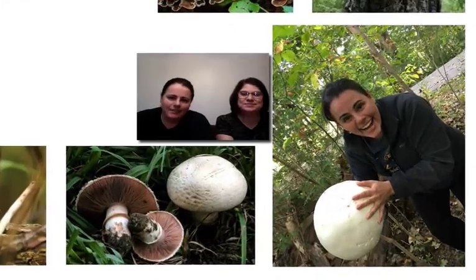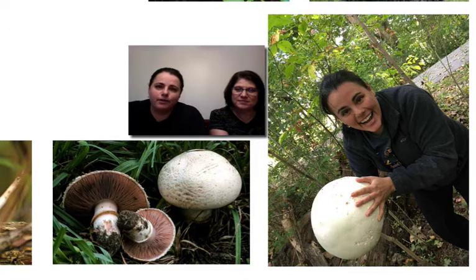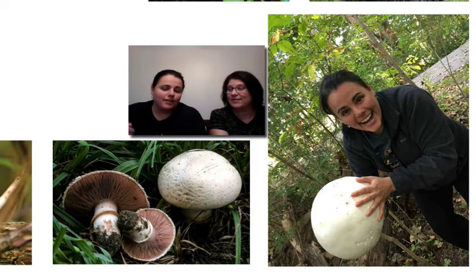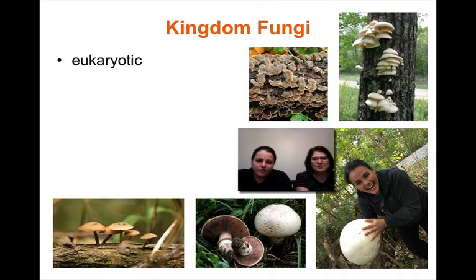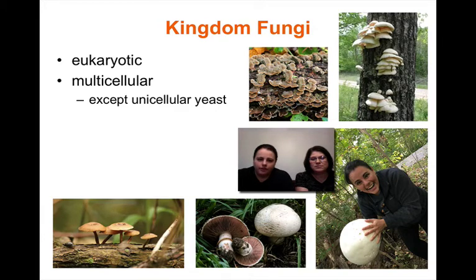Kingdom Fungi — Ms. Haller and I took a walk at a park one day and came across a giant puffball, and I had to pick one up and take a picture. Fungi are eukaryotic, so they're made of large complex cells, just like plants and animals. They are multicellular, just like plants and animals, except for yeast — yeast is the only exception and is unicellular.